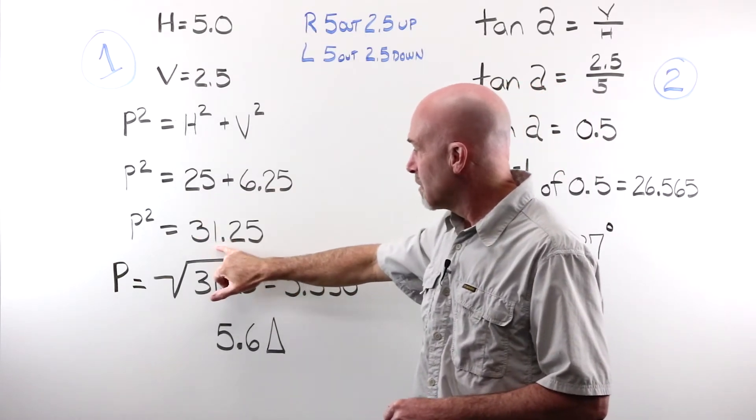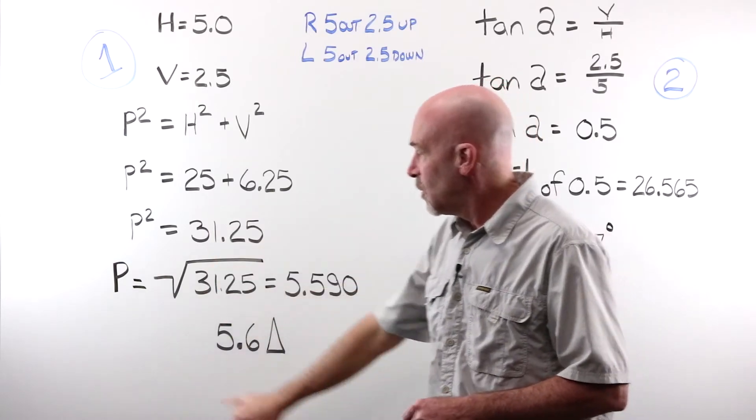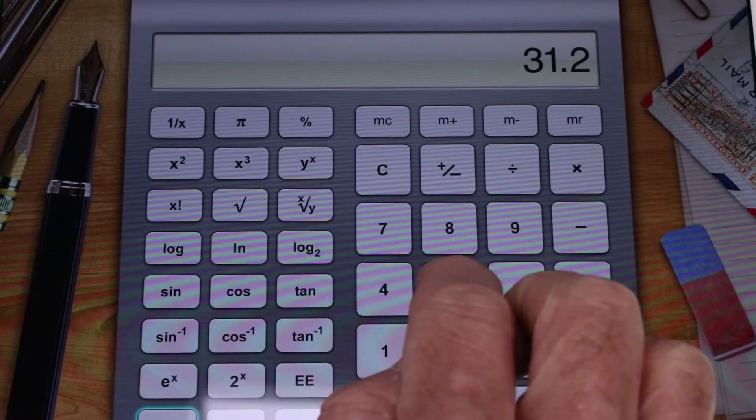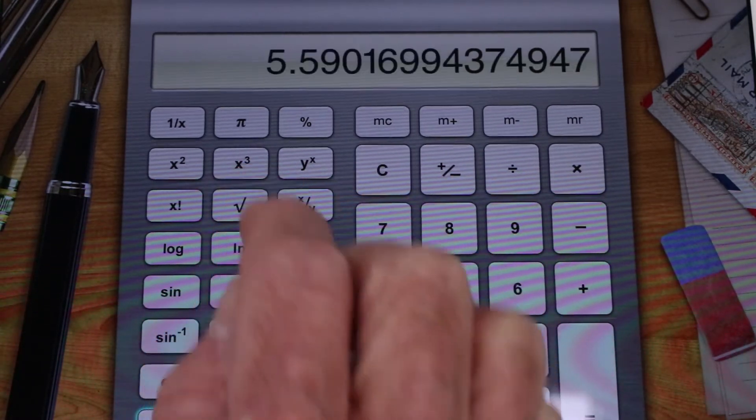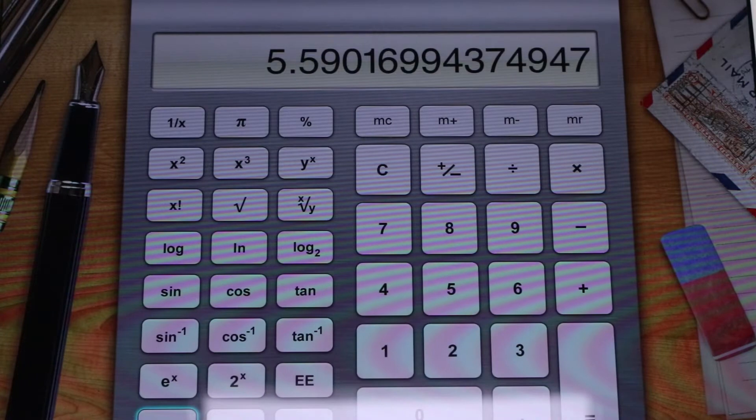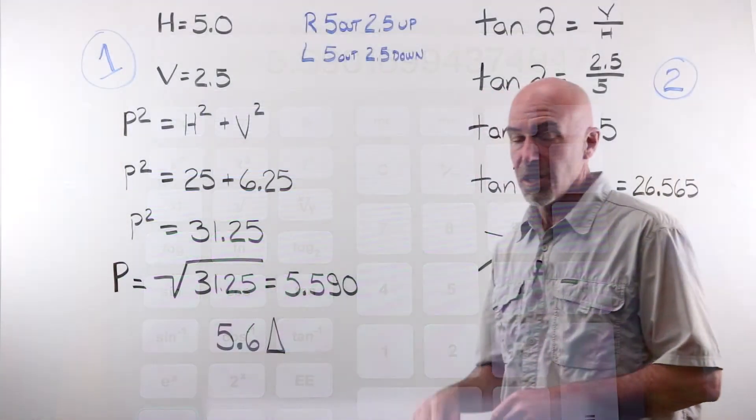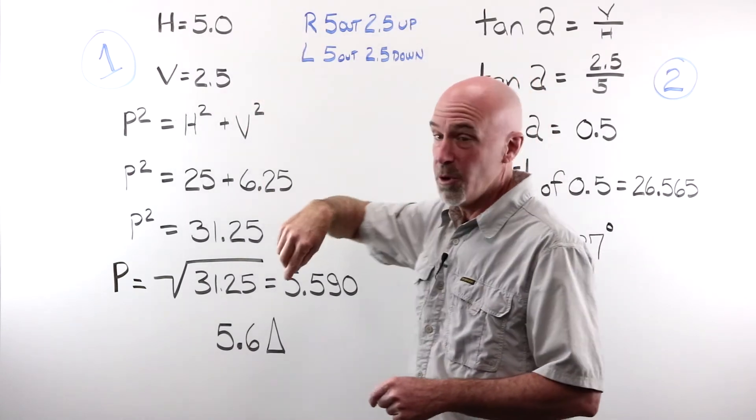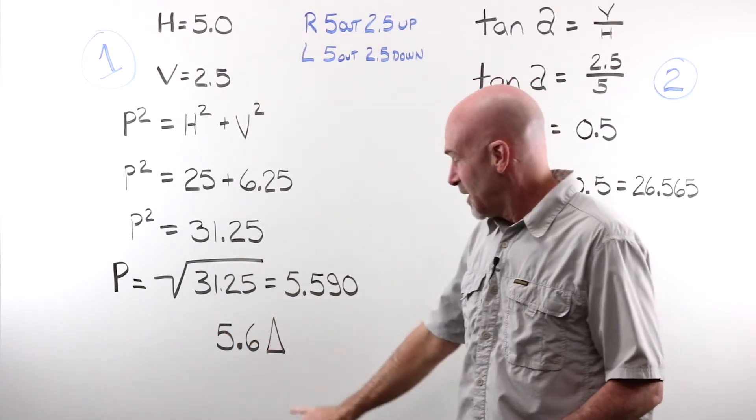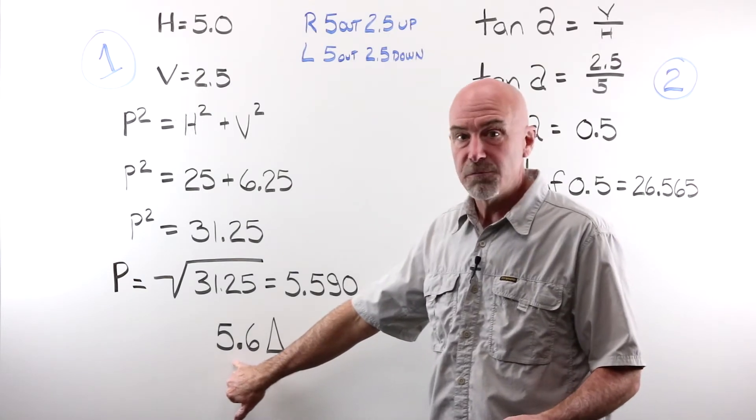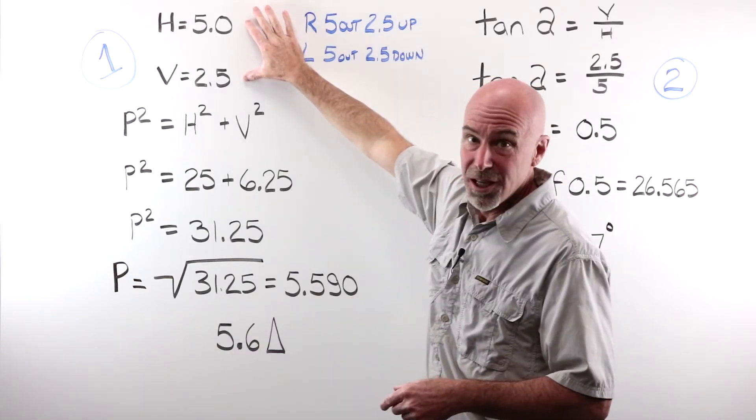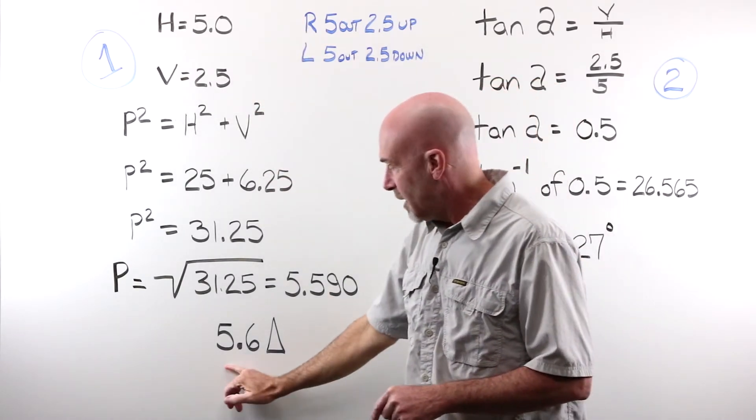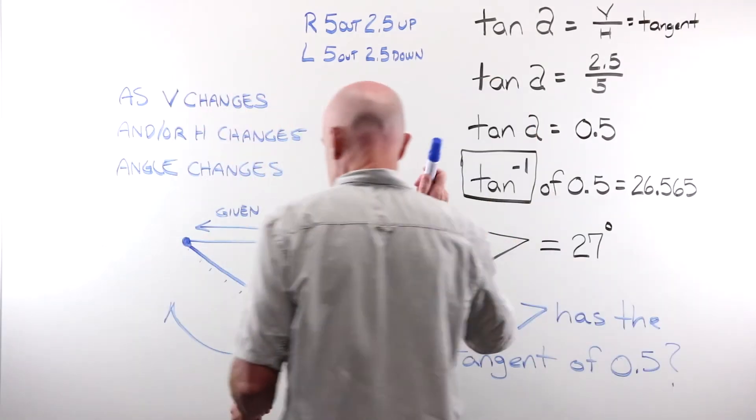2.5 squared is 6.25. Those added together are 31.25. We want P, not P squared. So we're gonna take the square root of our 31.25, and we end up with 5.59, or 5.6 diopters. Notice that 5 plus 2.5 is 7.5. Where do we end up? 5.6. That's why we don't just add these together as a result for resultant prism. We have to work through this, and we end up here. We have got our amount.